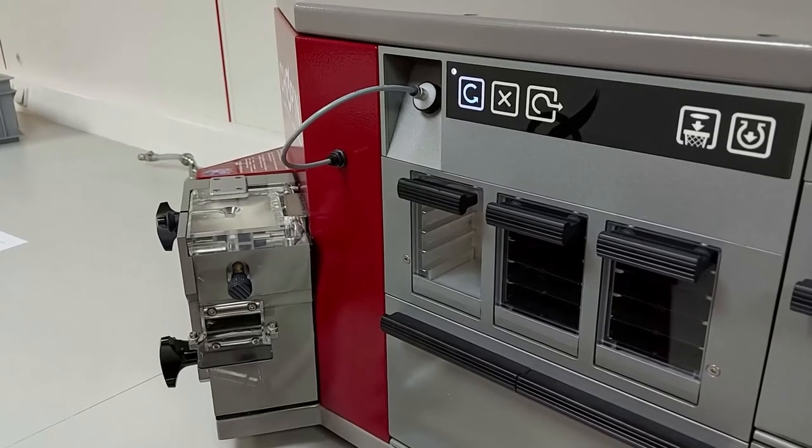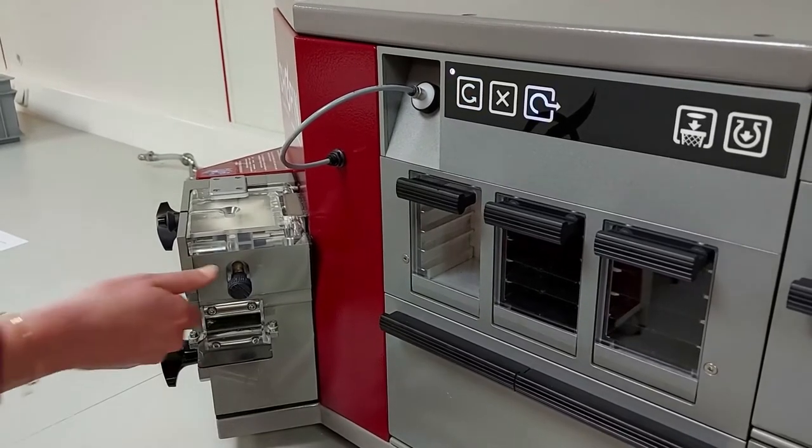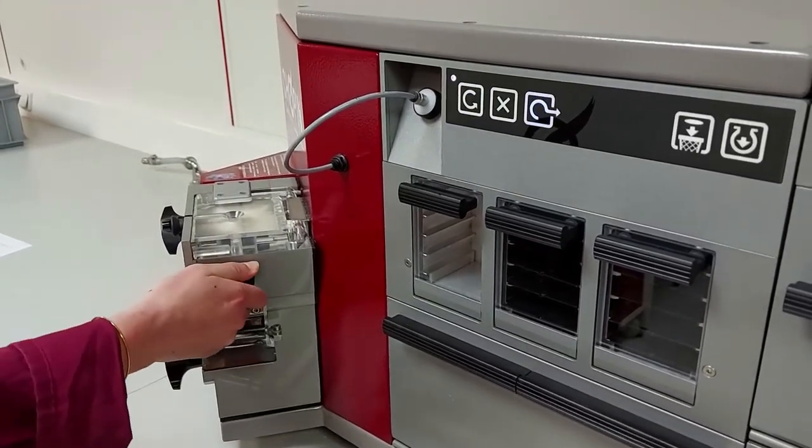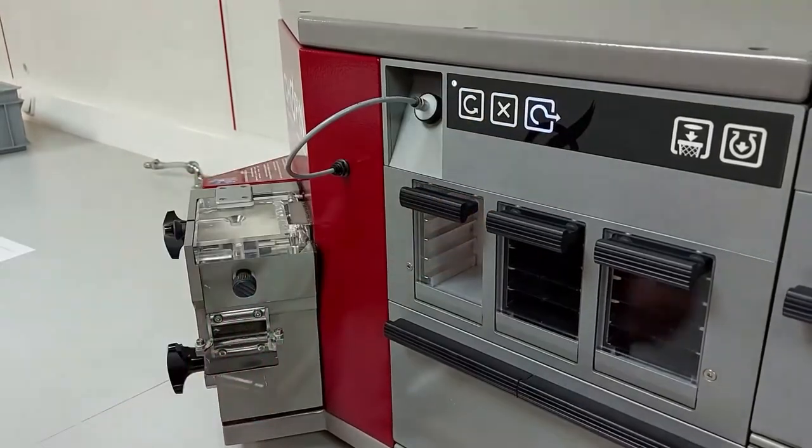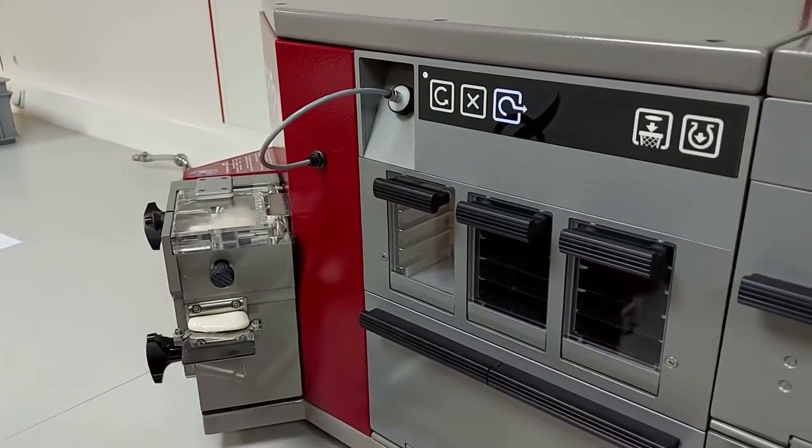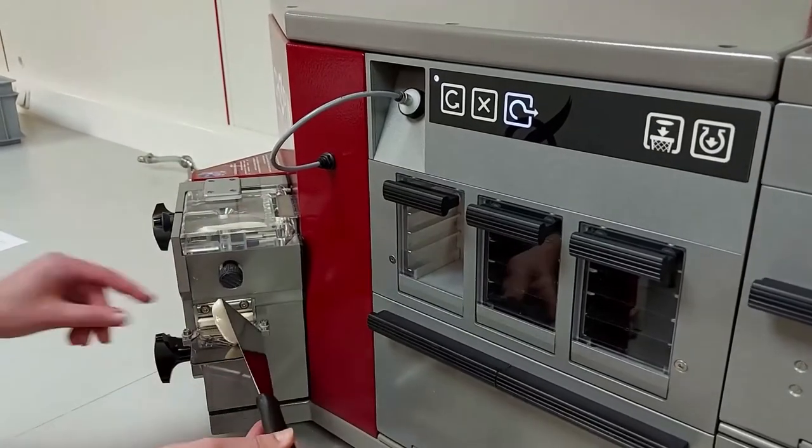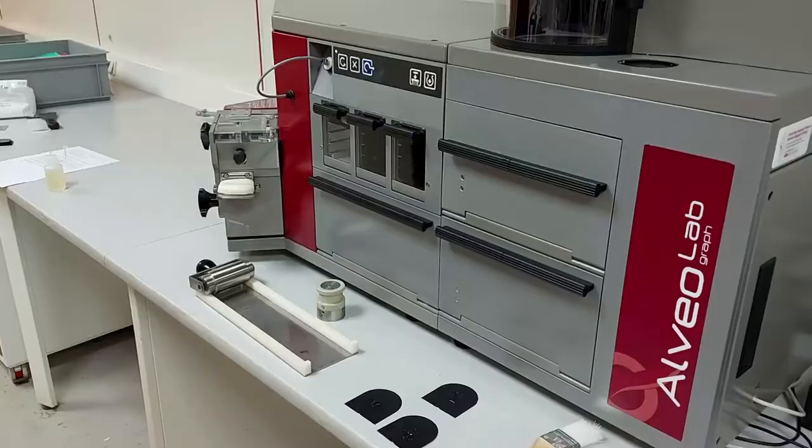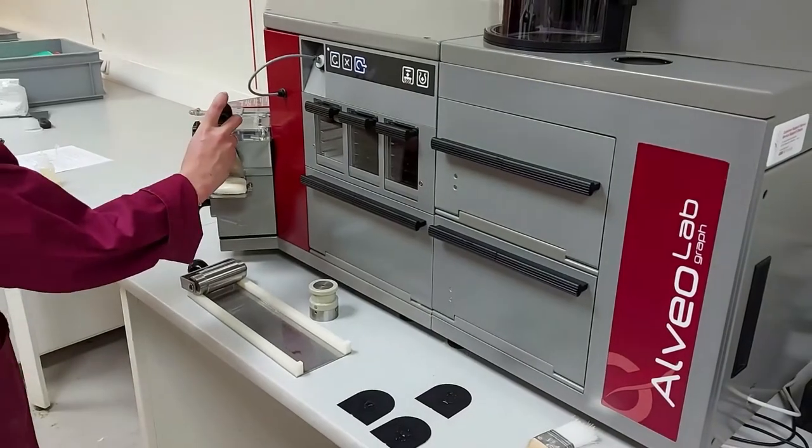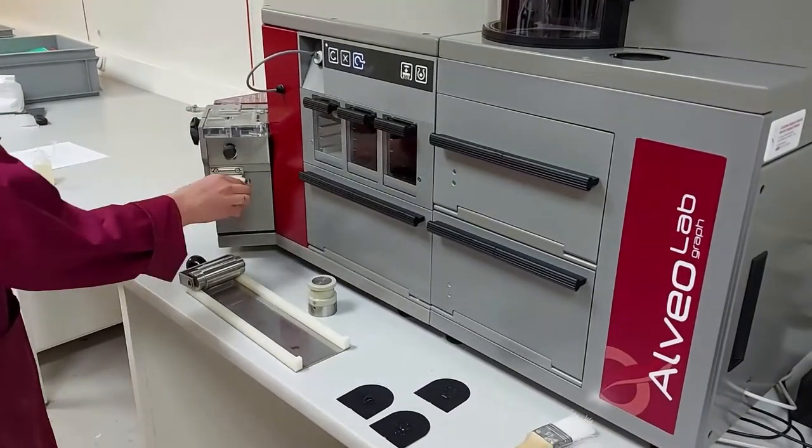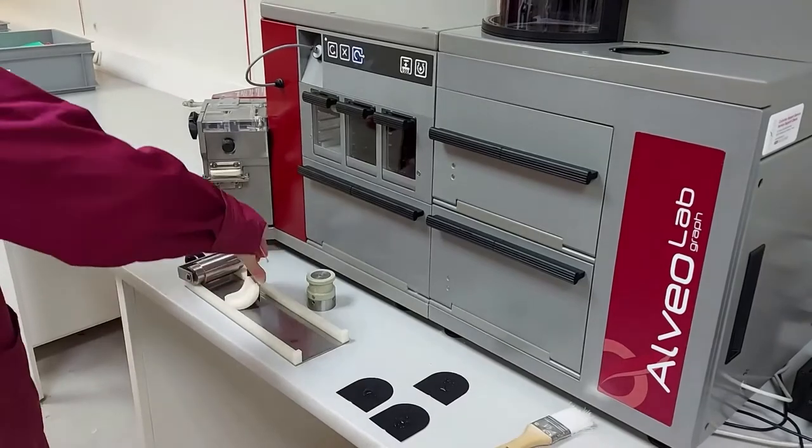When the mixing stops after a total of 8 minutes, open the extrusion aperture by raising the F-register and start extruding the dough test pieces. Remove the first cm of dough using a knife in a clean downward movement. When the strip of dough has reached sufficient length, cut it and place the piece of dough onto the laminating plate.